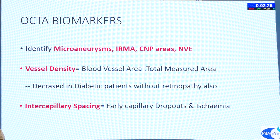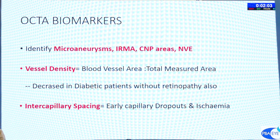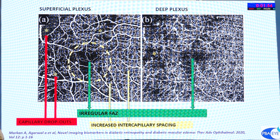OCT angiography biomarkers are newer tools that can identify microaneurysms, IRMA, capillary non-perfusion areas, and NVEs. Vessel density — blood vessel area relative to total measured area — is decreased in diabetic patients even without detectable retinopathy. Other markers include intercapillary spacing, early capillary dropout, ischemia, FAZ enlargement, and fractal dimension. In this image, red indicates capillary dropout areas, green shows irregular FAZ, and yellow shows increased intercapillary spacing.